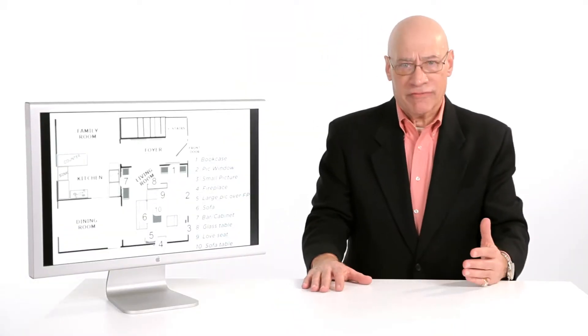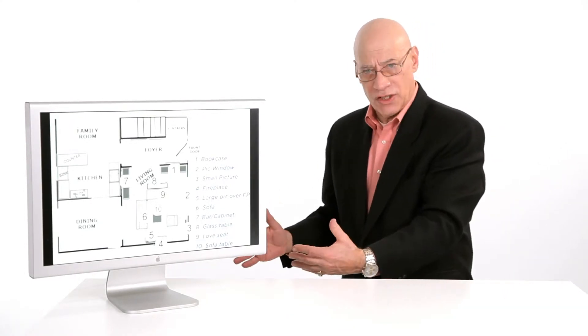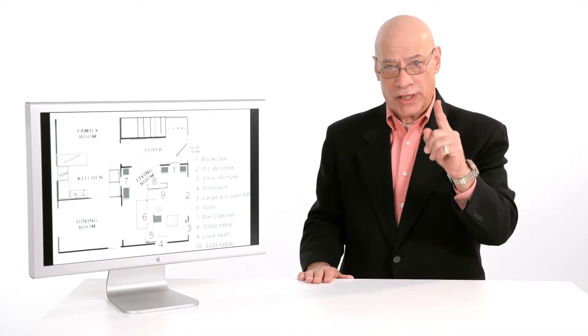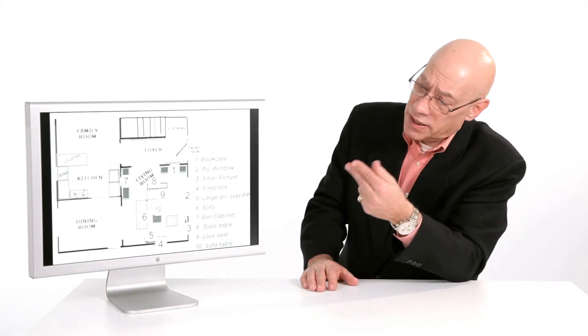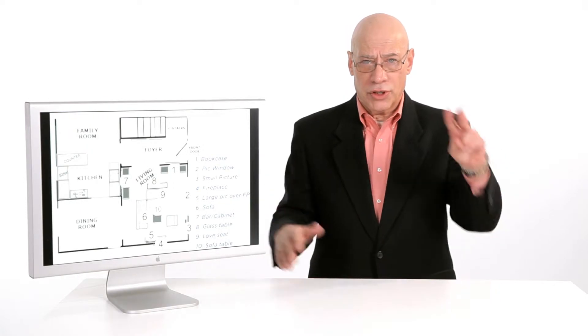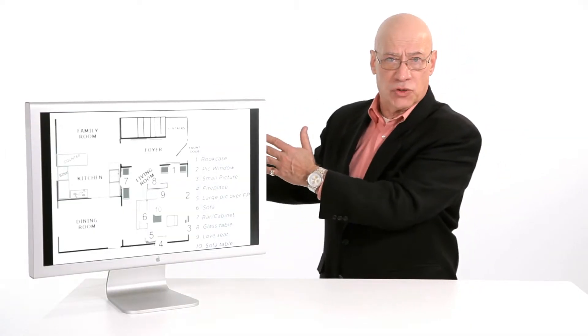When I walk into my living room, the first thing I see on my left is a small bookcase. My number one in my memory palace system is bookcase in the living room. The second thing I see is a picture window, a large picture window. Number one is that small bookcase. I walk around to the picture window. Number three is a small picture that's hanging to the side of the picture window.